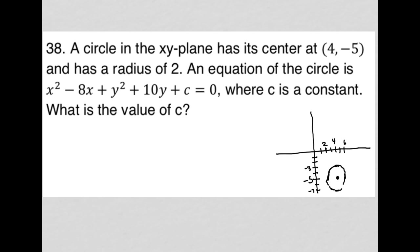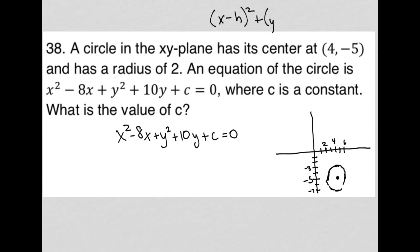The equation of the circle is given. Anytime I see an equation of the circle written out in this way, I prepare myself to use completing the square to solve, because the circle equation should look like (x - h)² + (y - k)² = r². Anytime it doesn't look like that, I'm most likely going to need to use completing the square. So it says where c is a constant — what is the value of c? Let's do completing the square.